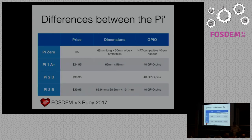As far as price goes, the Pi Zero is $5 — freaking cheap — and the Pi Three goes to $40. All the latest ones have 40 GPIO pins for you to plug in sensors and whatever you want.